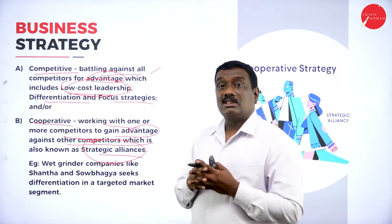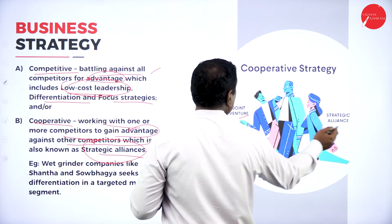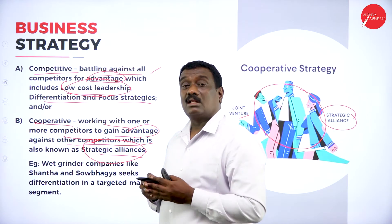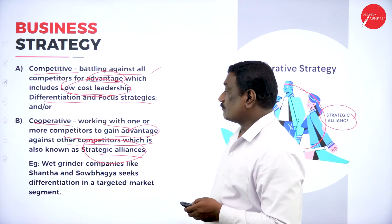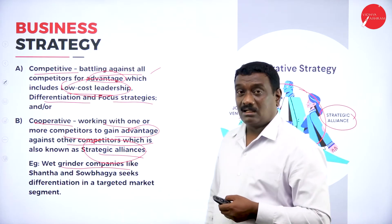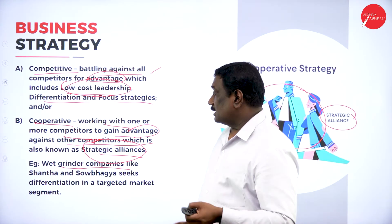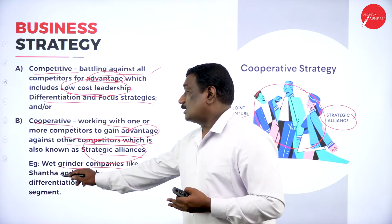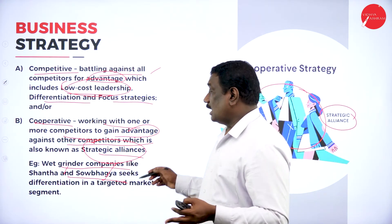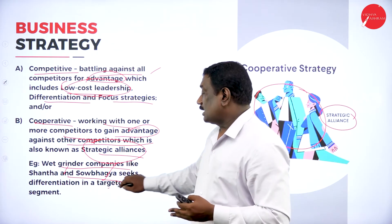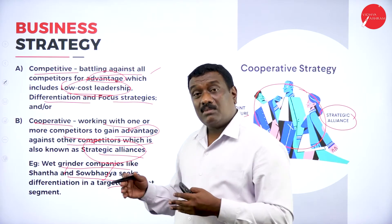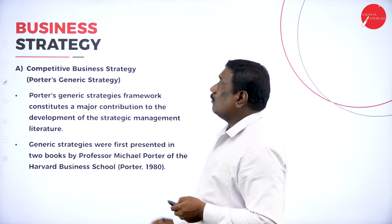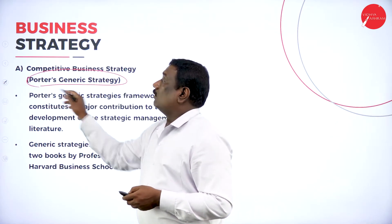When you cooperate with one or more competitors and do business together, that kind of strategy is called cooperative strategy or strategic alliance — making an alliance with each other, including joint ventures. The example given here is the wet grinder machine companies Shanta and Sohambagya, two different companies seeking differentiation in target market segments by combining together.